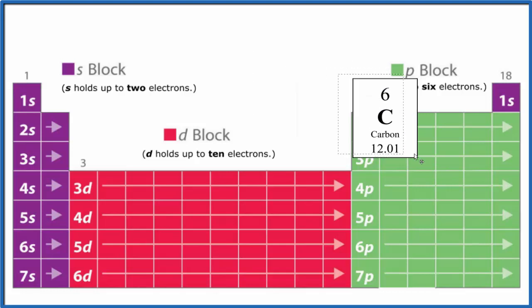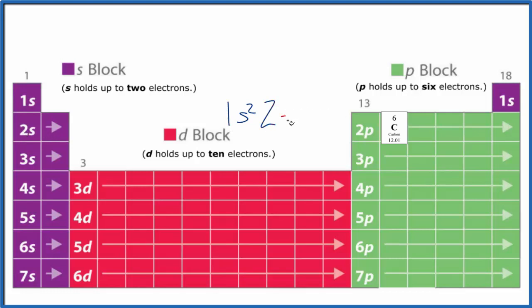Carbon is right here on the periodic table, so we can follow the pattern to figure out the electron configuration. We start with the first energy level: 1s1, 1s2, that's full, so then we go to 2s, 2s1, 2s2.